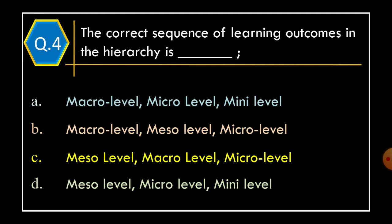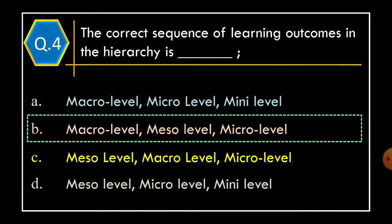Question 4: The correct sequence of Learning Outcomes in the hierarchy is — Option A: Macro Level, Micro Level, Mini Level; Option B: Macro Level, Meso Level, Micro Level; Option C: Meso Level, Macro Level, Micro Level; Option D: Meso Level, Micro Level, Mini Level. The correct option is Option B: Macro Level, Meso Level and Micro Level.